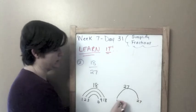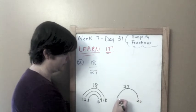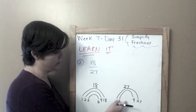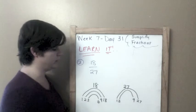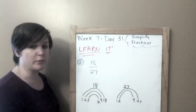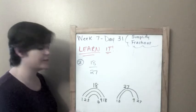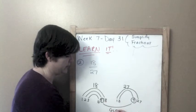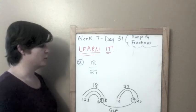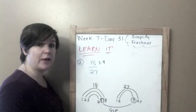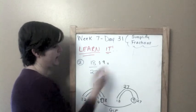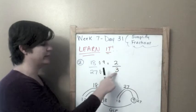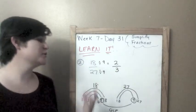And what is the one that they have in common that is the greatest? 9. Now we found our GCF. Our GCF is 9. We're going to divide the numerator by 9, and we're going to divide our denominator by 9. 18 divided by 9 is 2. 27 divided by 9 is 3. Our simplified lowest terms, our reduced fraction is 2/3.